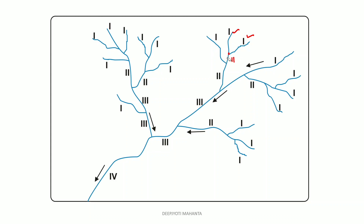Now, this second order stream is meeting a first order stream. As I already said, when a first order and second order meet, we take the higher number — so the resultant will be a second order stream. Don't be confused: since it is the same stream continuing, we count it as a single second order stream. The stream was already second order, and after meeting the first order, it remains second order — so we take it as one single second order stream.